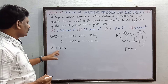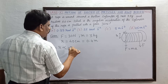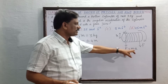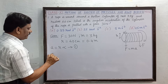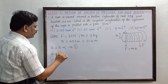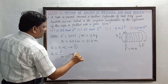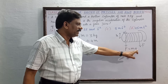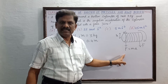From Newton's second law, F is equal to M into A. So A is equal to F divided by M. This is equation 2.